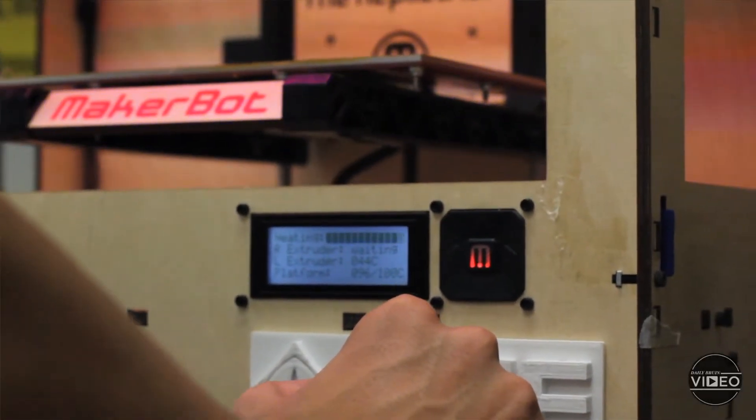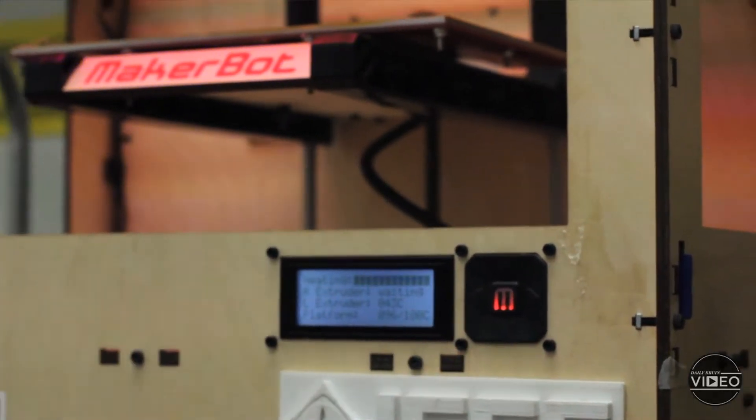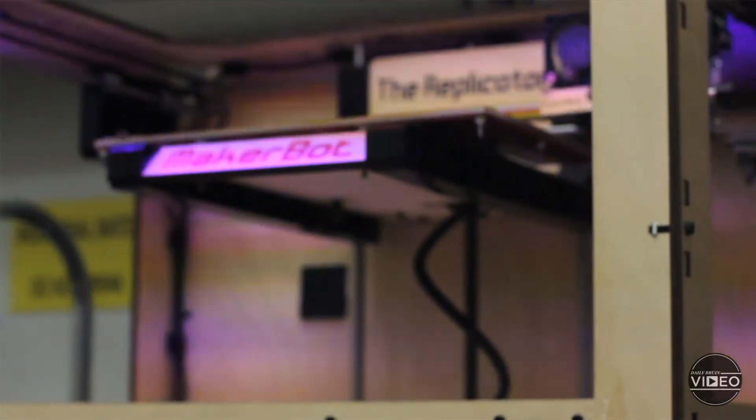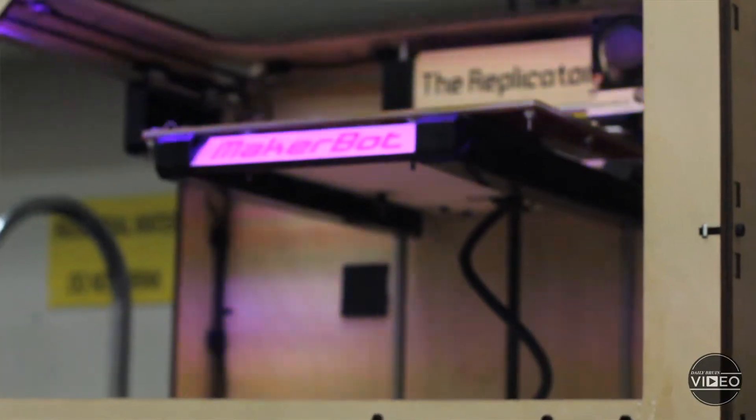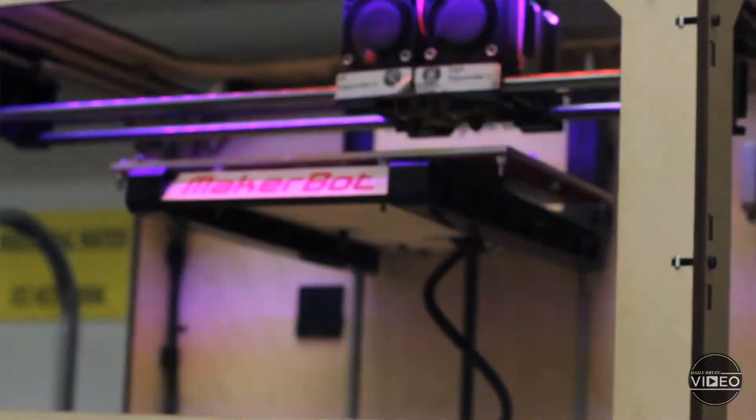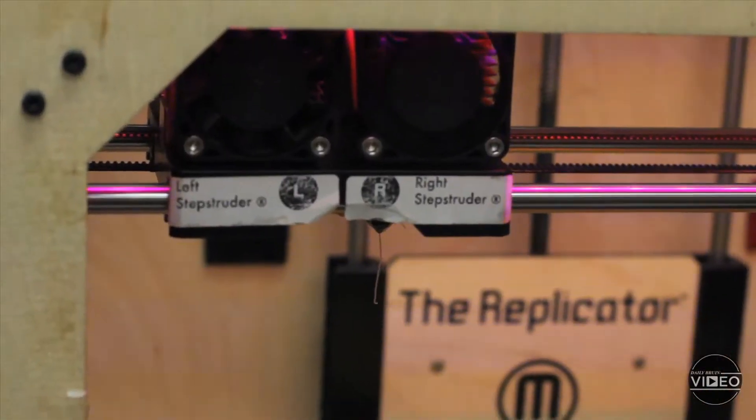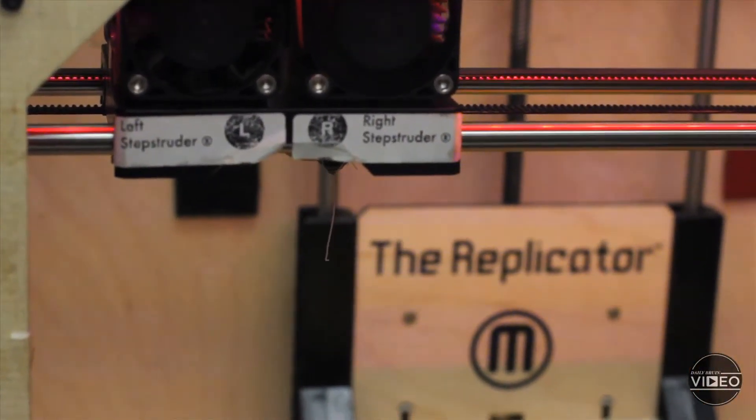From there, what actually builds the parts that you're making are the extruders up here, which are heated, small, almost needle-like parts where the plastic in the back will feed into the top, get heated to 230 degrees Celsius, and melt.